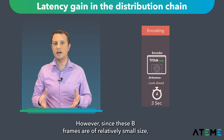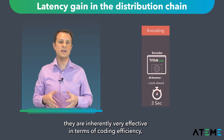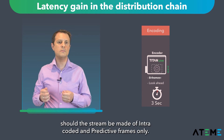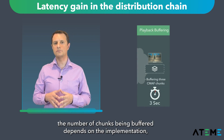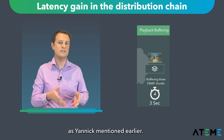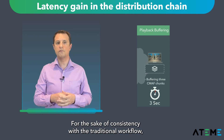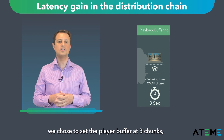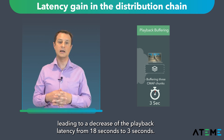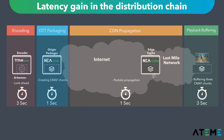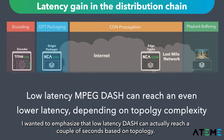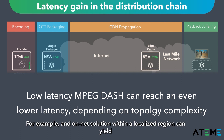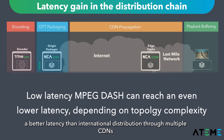However, since these B-frames are of relatively small size, they are inherently very effective in terms of coding efficiency, and the video quality would suffer should the stream be made of intra-coded and predictive frames only. On the playback buffering side, the number of chunks being buffered depends on the implementation. For the sake of consistency with the traditional workflow, we chose to set the player buffer at three chunks, leading to a decrease of the playback latency from 18 seconds to 3 seconds. Even though we are mentioning a latency of 8 seconds here, low latency DASH can actually reach a couple of seconds based on topology — for example, an on-net solution within a localized region can yield better latency than international distribution through multiple CDNs.